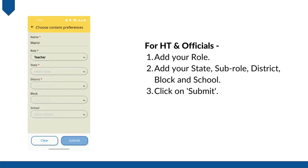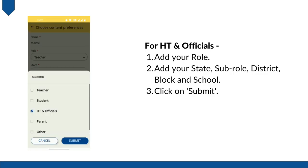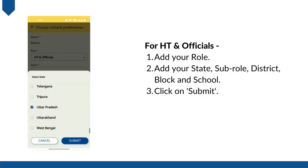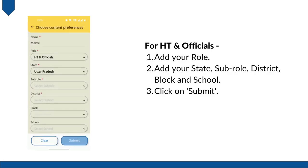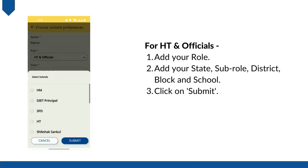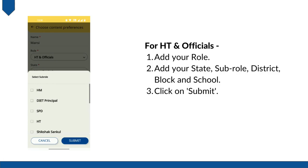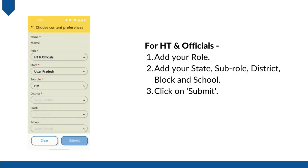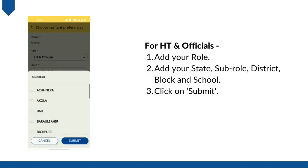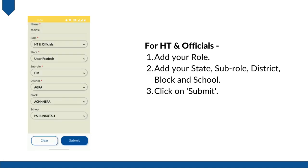If you are a headmaster, headteacher, or principal, then select your role as H.T. and officials. Then select your state. For the next option, sub role, click on sub role and from the given list select your designation in your school — that is H.T. if you are a headteacher, or H.M. if you are a headmaster. Then select your district, your block, and the name of your school. Then click on submit.